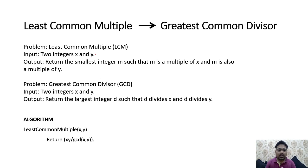So what exactly is the problem? For LCM, the input is two integers x and y. LCM stands for the smallest integer m such that m is a multiple of x and m is also a multiple of y. You already know how to find the LCM. Don't worry if you don't - I will show you with an example.